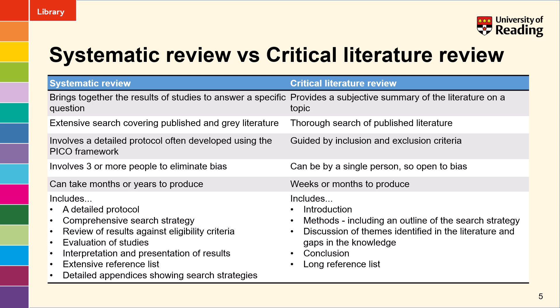Whereas with a critical literature review, the write-up will include a scene-setting introduction; the method section will include the search strategy and details of where you searched; a discussion of themes will be included next — this will be the biggest section, drawing out the topics that have come out of the literature and also identifying gaps for future research — and then a conclusion and a long reference list as well.